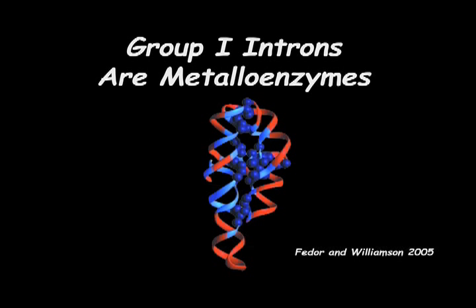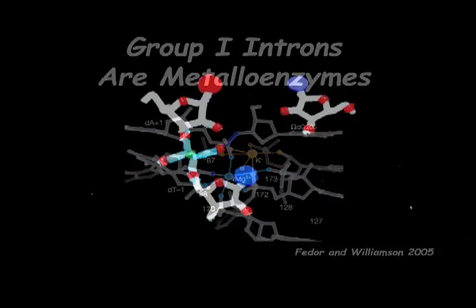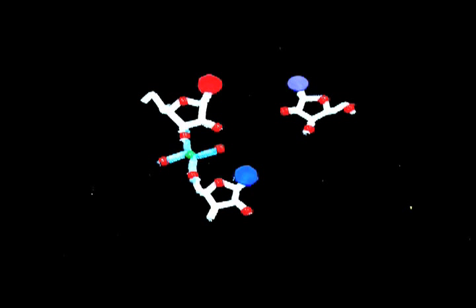Group I introns are considered metalloenzymes since metal ions are essential for their structure and catalytic function. In addition to stabilizing the tertiary structure of the ribozyme, metal cations are involved in catalysis. Three metal ions, A, B, and C, are believed to be involved in the splicing reaction.